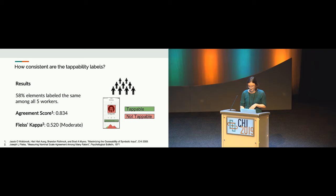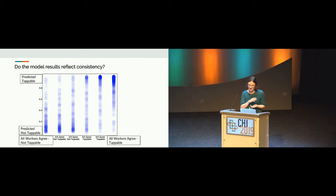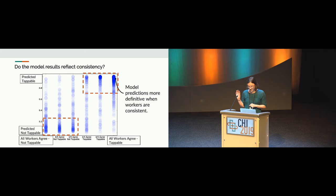We also ran our model's prediction on the dataset collected for consistency analysis. From the scatter plot, our model matches the uncertainty in human perception pretty well. When all workers agree that an element is tappable, the model gives a more definitive prediction — and this also holds for not tappable elements, where the model is more confident when workers agree.